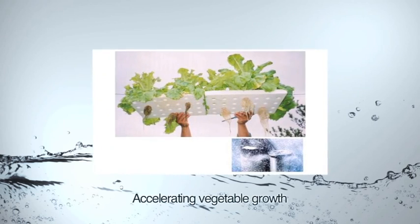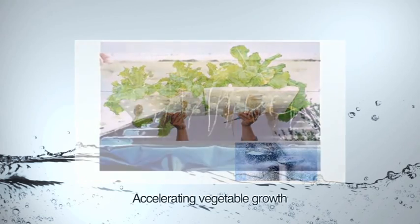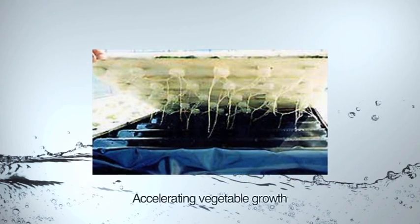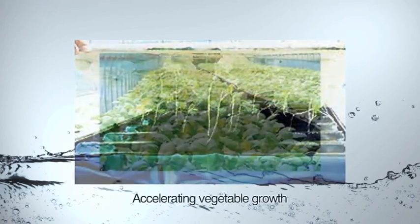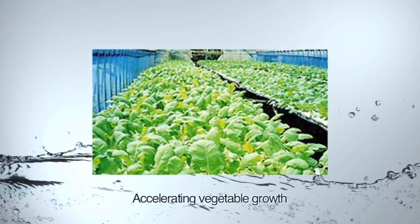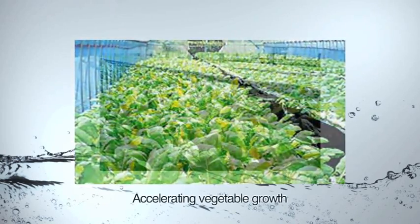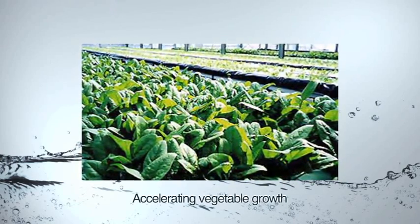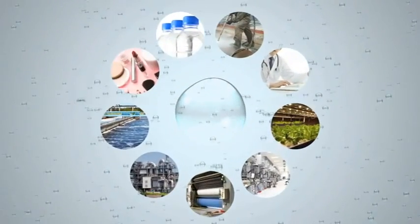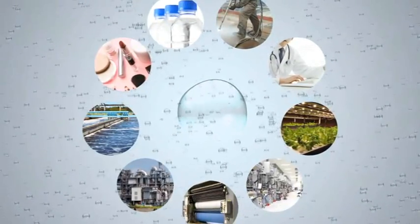In the field of agriculture, ultrafine bubbles are being used to accelerate vegetable growth. Early harvesting has been confirmed when using ultrafine bubbles on lettuce and other crops, indicating that ultrafine bubble technology can help increase agricultural production efficiency — a benefit of global importance. Additional research is continuing for the practical application of ultrafine bubbles in a wide range of fields.